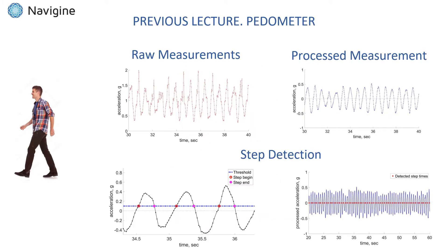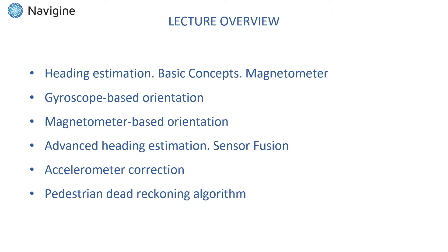In the previous lecture we discussed the pedometer algorithm used to estimate moments of person's steps and their length based on readings from accelerometer. In this lecture we will discuss how we can determine the orientation and heading of a person using micro sensors found in most modern gadgets.